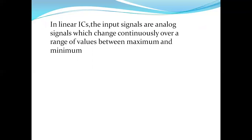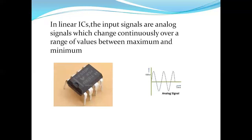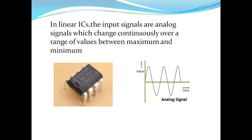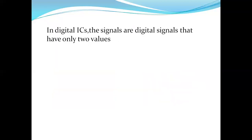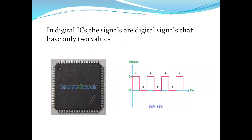Coming to the categorization or classification of ICs: ICs can be grouped into two categories depending on the nature of the input signals. The first one is linear ICs and the second one is digital ICs. In linear ICs the input signals are analog signals, which change continuously over a range of values between maximum and minimum. The output linearly varies in accordance with the input — that is, the output is proportional to the input. The op-amp, also called the operational amplifier, is the best example of a linear IC. In digital ICs, the signals are digital signals that have only two values: 0 and 1.